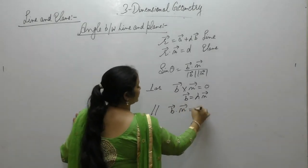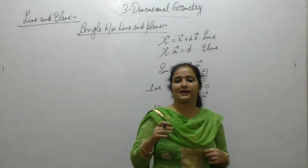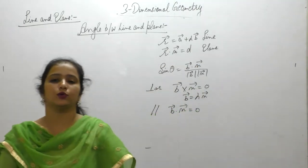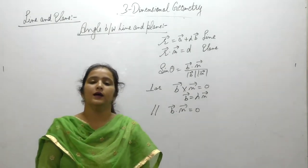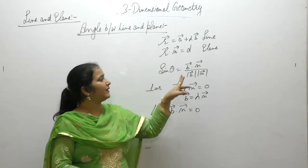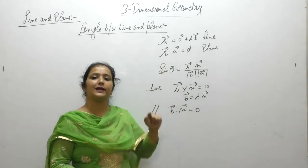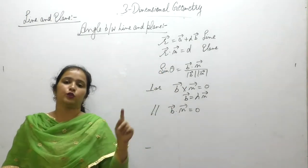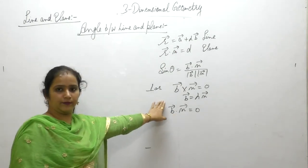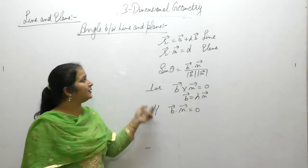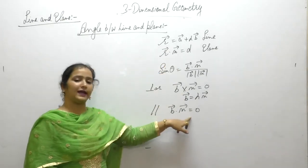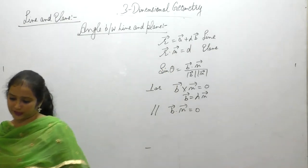The condition is the reverse here. For two lines, if they are perpendicular their dot product is zero, and if parallel their cross product is zero. But for line and plane: if the line is perpendicular to the plane, it becomes parallel to the plane's normal. Is it clear?